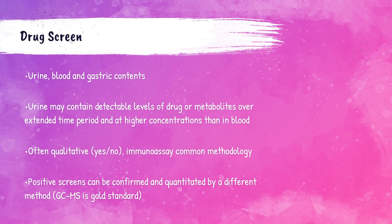Drug screens are often qualitative tests which can either give a positive or a negative result. A qualitative test will give you a yes-or-no answer — for example, yes, the patient has cocaine in their system, or no, the patient does not. A quantitative test gives a specific quantity of a substance present in the patient's system — for example, there is x amount of cocaine in the blood.